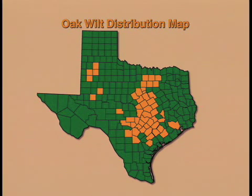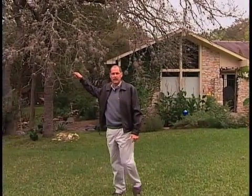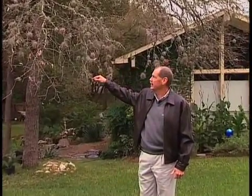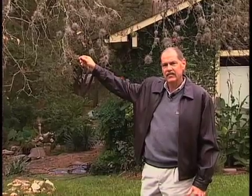Oak wilt is caused by a fungus which can be devastating. We have an example right here of a tree that has been killed by the fungus in the past few months, and this is the final stage of the disease. When the fungus gets into a live oak like this, the tree generally takes about three to six months before it dies. That's one of the ways you can recognize oak wilt, because live oaks take quite a while to die compared to red oaks — for example, Spanish oak or blackjack oak — which die within about four to six weeks after you first see symptoms.